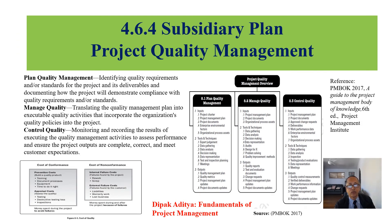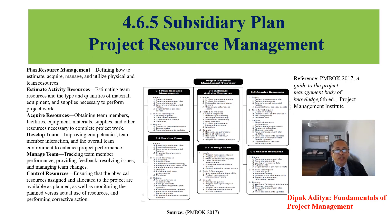Project quality management has three processes: plan quality management, manage quality, and control quality. The cost of quality includes all costs for prevention and appraisal, as well as internal and external failure costs. Project resource management has six processes: plan resource management, estimate activity resources, acquire resources, develop team, manage team, and control resources. Estimation methods include bottom-up estimating, analogous estimating — using information from a previous similar project — and parametric estimating, which uses an algorithm.